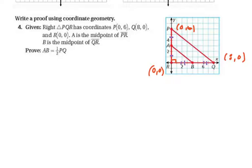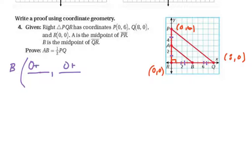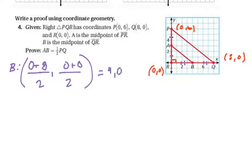The first thing we need to do is get the coordinates of B. Since B is the midpoint of RQ, we plug in the X and Y values for R and add them to the X and Y values for Q. We get the coordinates of B, which are 8 divided by 2, so 4, and then 0. So B is (4, 0).